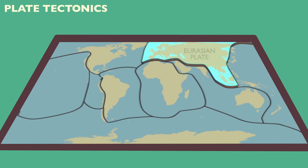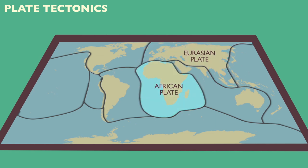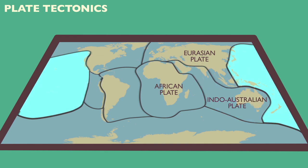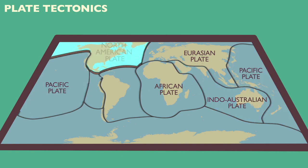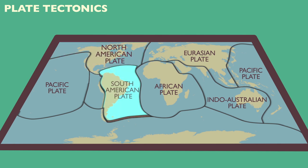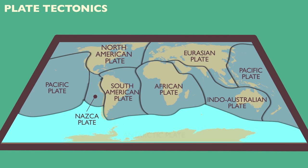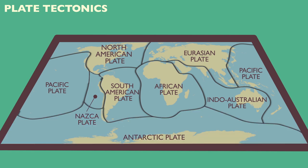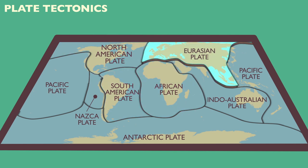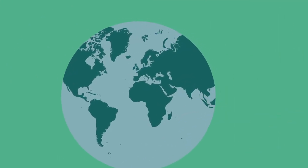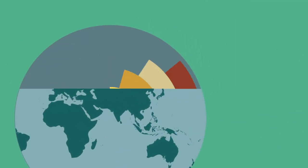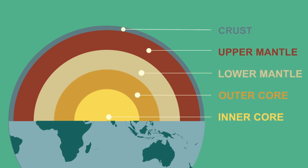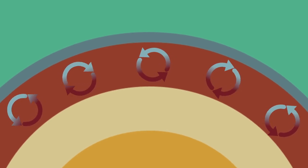There are eight major plates: the Eurasian, African, Indian, Australian, Pacific, North American, South American, and Antarctic. Some plates mark the boundaries of continents; other plates include more than one politically defined continent. The Earth's plates are constantly moving — on average, this movement is between 1 and 10 centimeters each year.